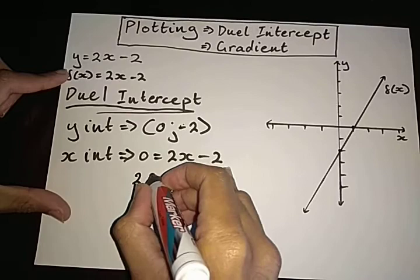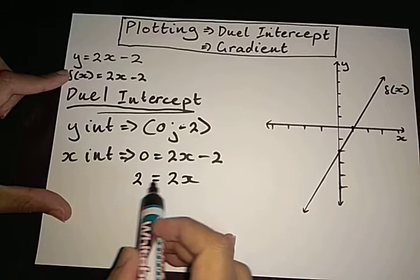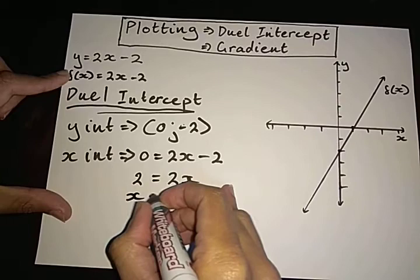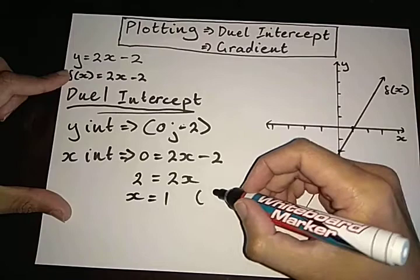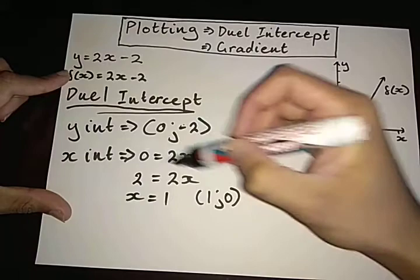Now we are going to apply simple algebra where I take that negative 2 over to a positive 2. And I'm going to divide both sides by 2 to solve for x. Therefore, x is equal to 1. Therefore, my coordinates should be 1 and 0.